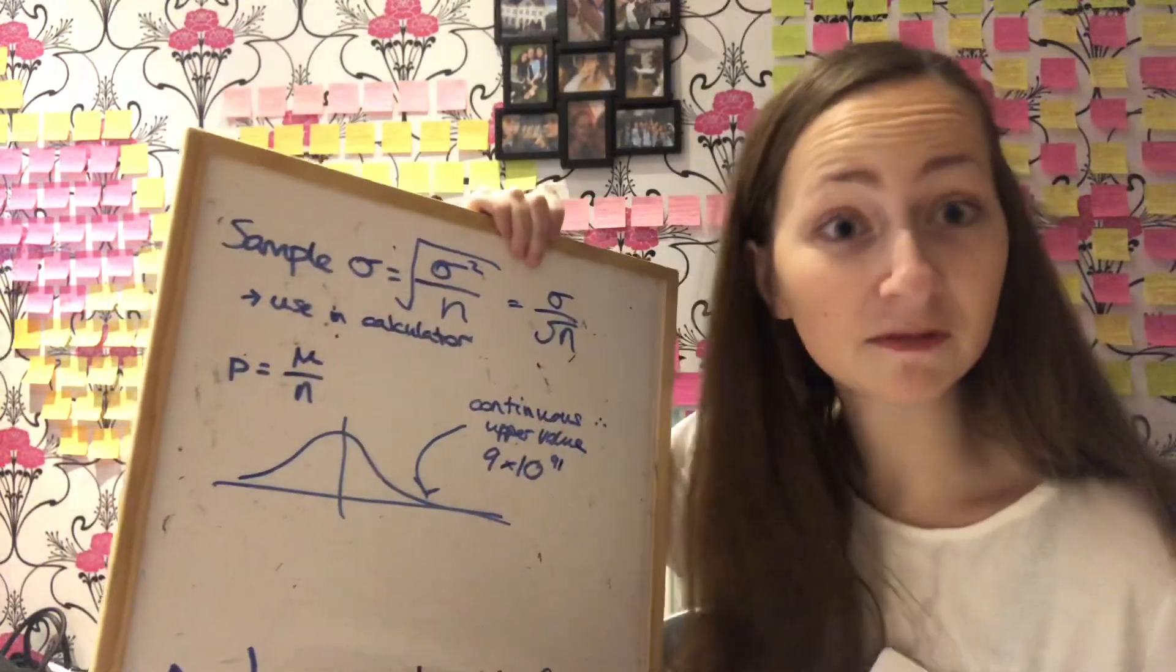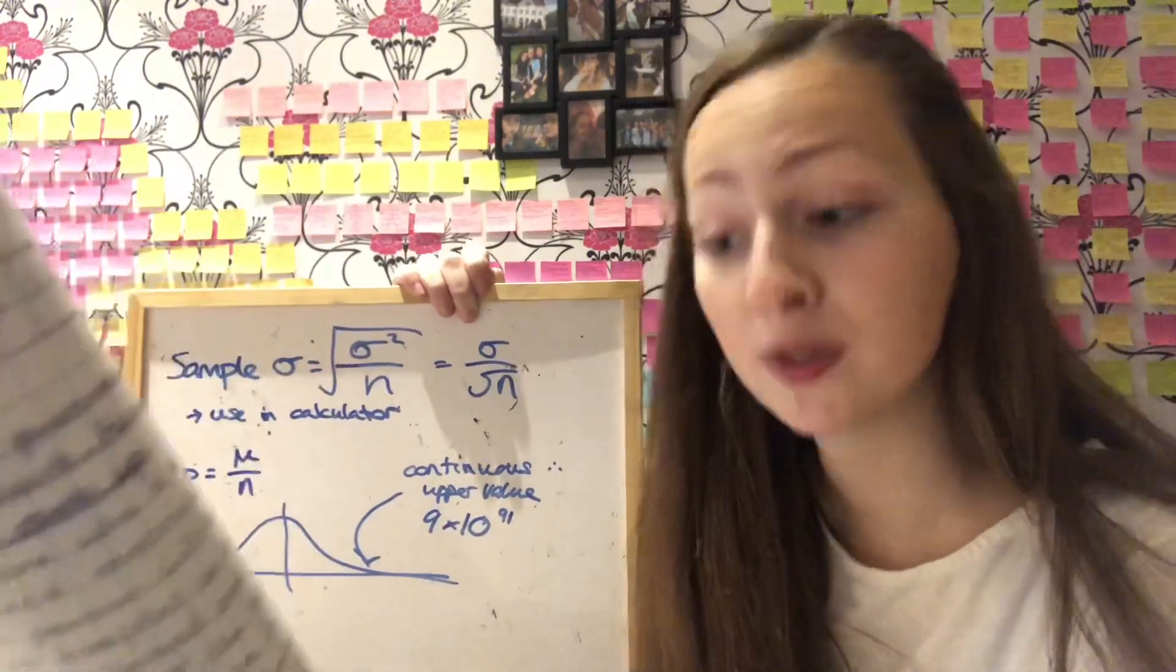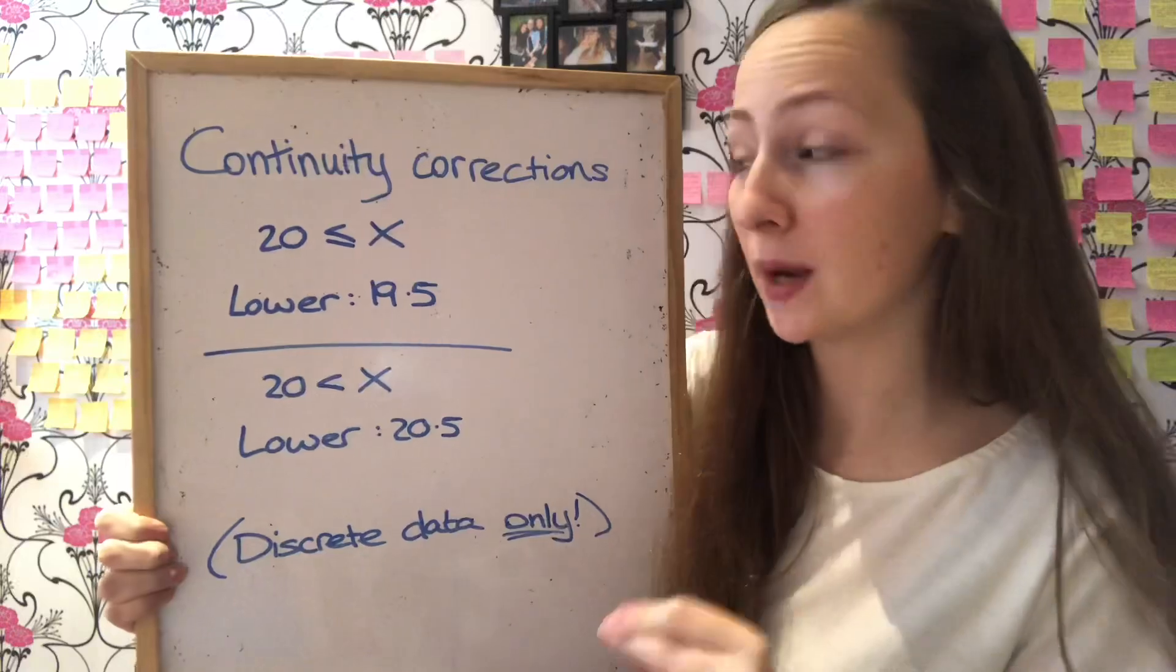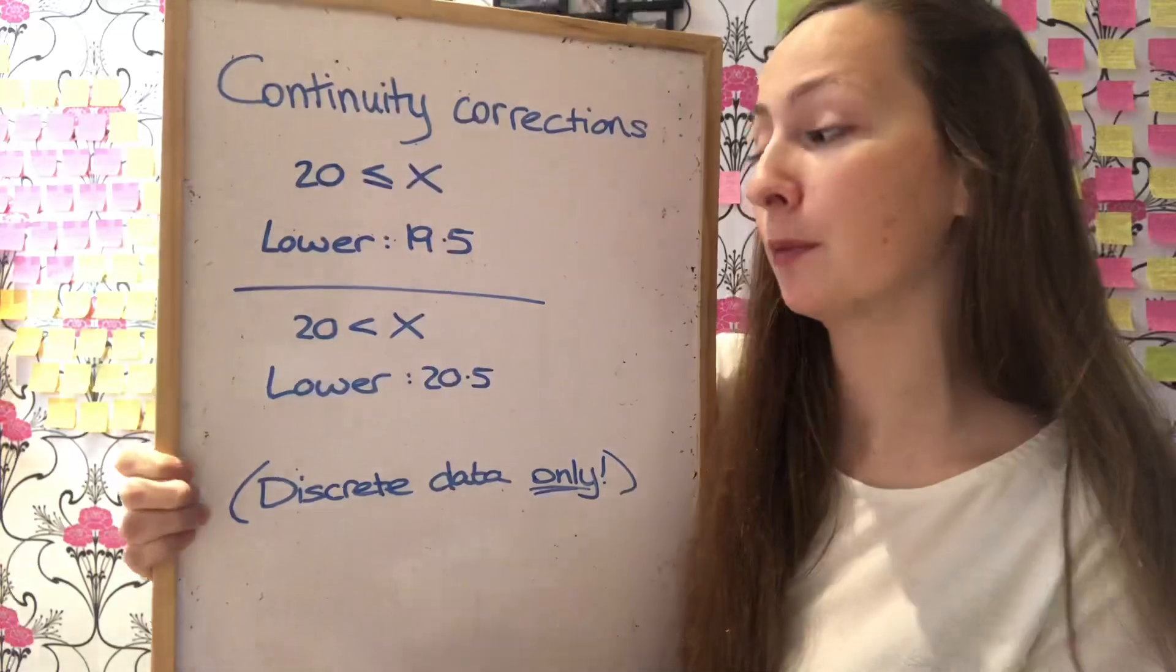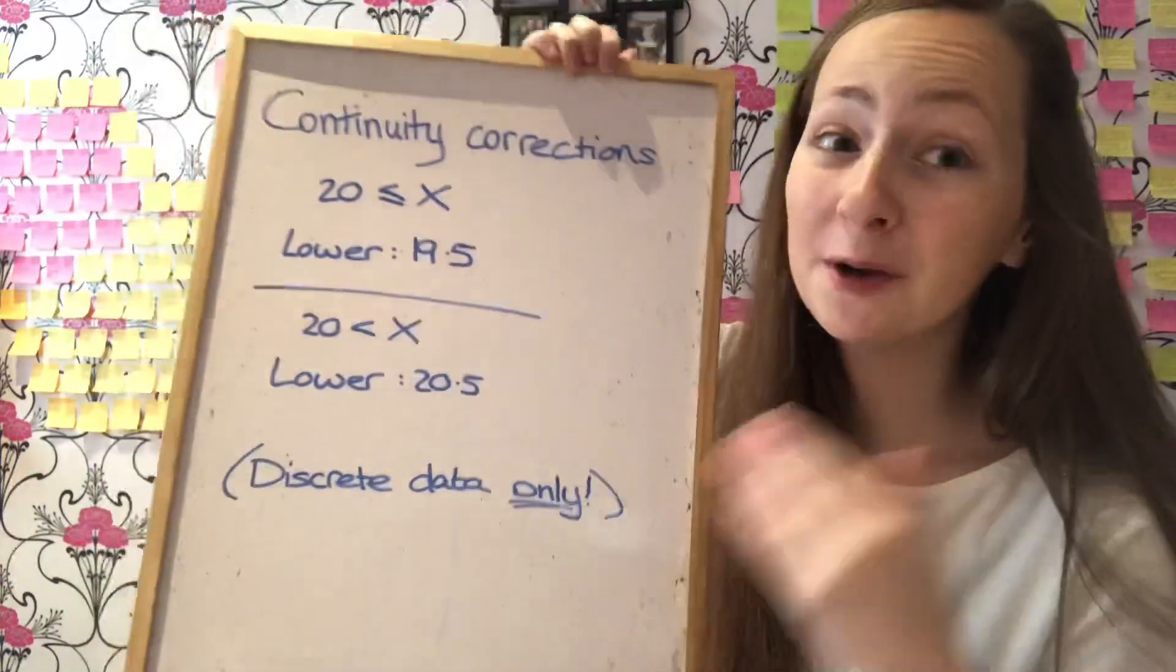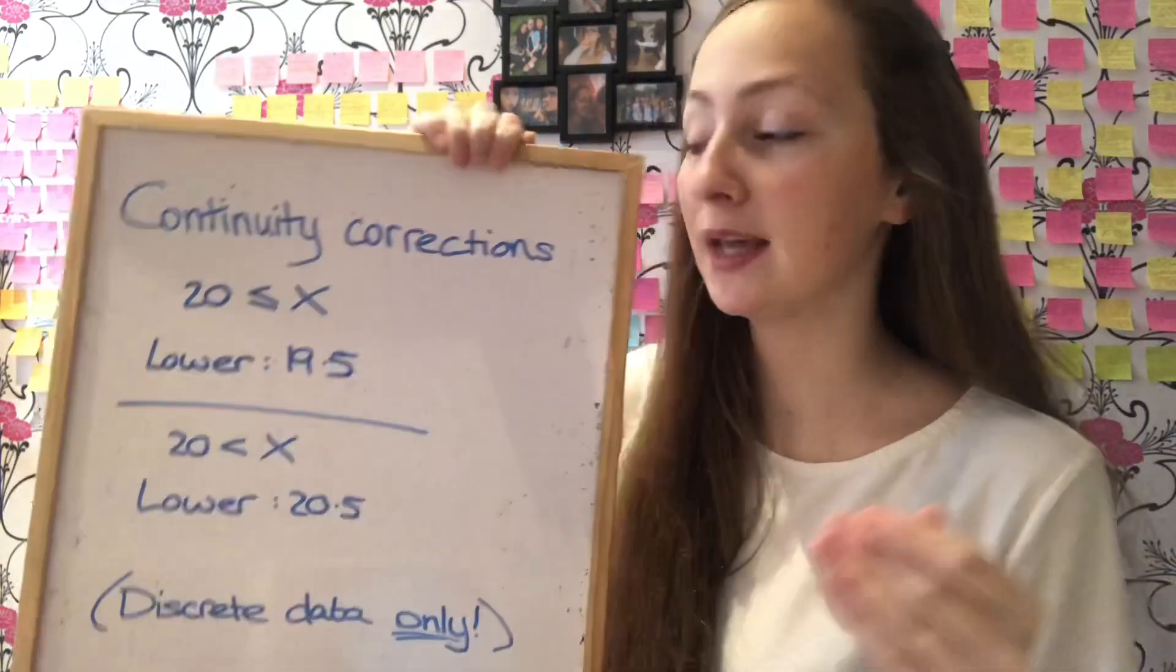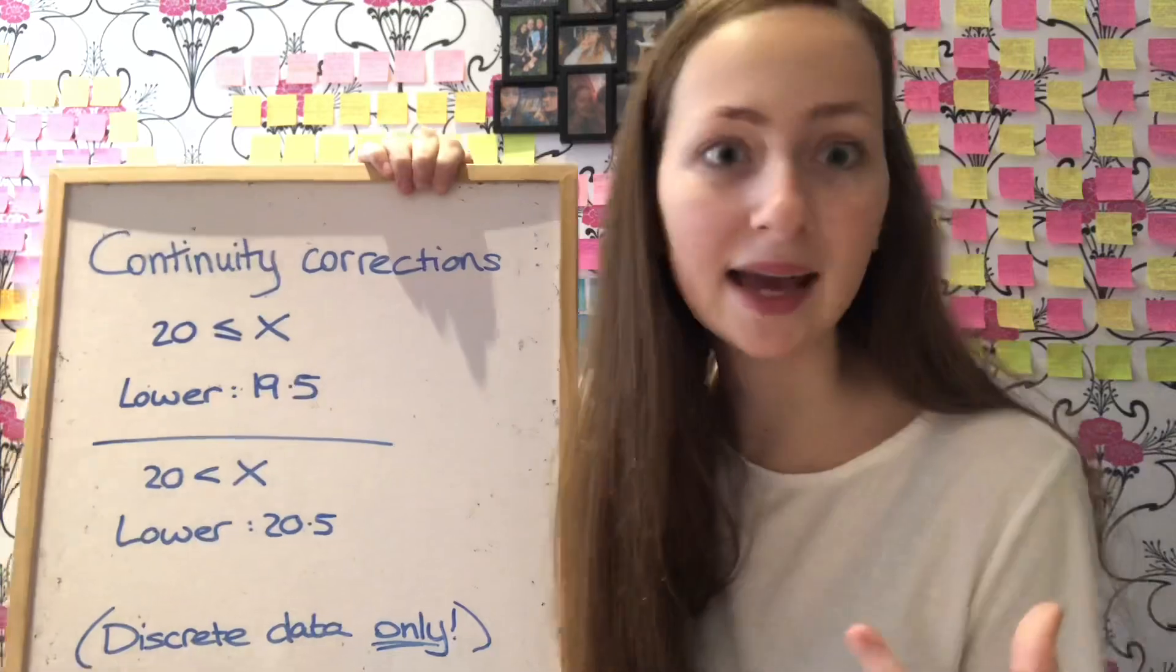So it's this bit where we're thinking about lower values and upper values that we have to start thinking about continuity corrections. Whenever a discrete distribution is approximated by a continuous one, a continuity correction may need to be used. Let's take this as an example for continuity corrections. If we are saying that X is greater than or equal to 20, we would put the lower value as 19.5. If we're saying that X is definitely greater than 20, we would put the lower value as 20.5. Always round to the nearest 0.5. Remember, you only ever do this when the data is discrete. Discrete data means it takes an exact value, whereas normally with the normal distribution we have continuous data, which means we can measure it to an infinite number of decimal places such as weight, mass, height, anything like that.